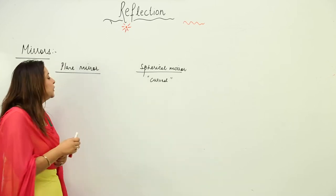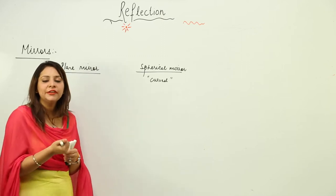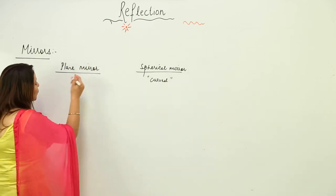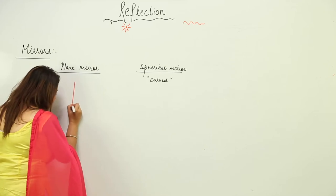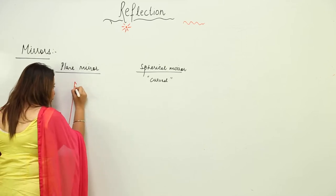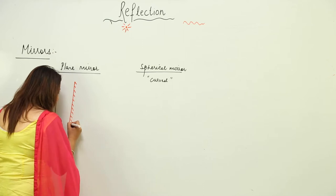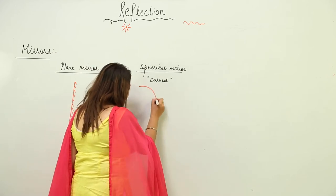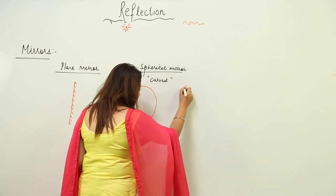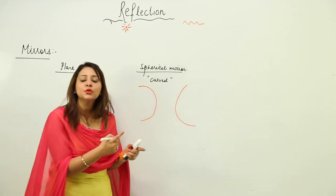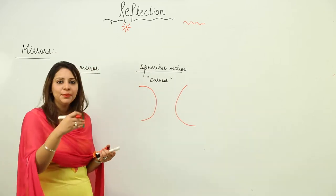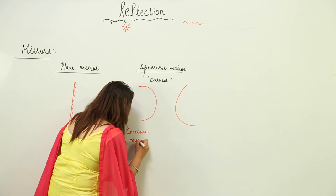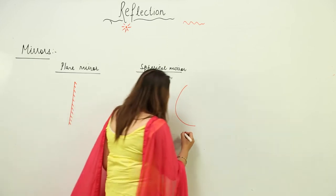In physics, whenever we draw ray diagrams for a plane mirror or spherical mirror, we need to know how to draw them. For a plane mirror, we draw a big line with small oblique lines on it. For a spherical mirror, we have two kinds: one is like the upper side of a spoon, called the concave mirror, and the other is like the lower side, which is convex.